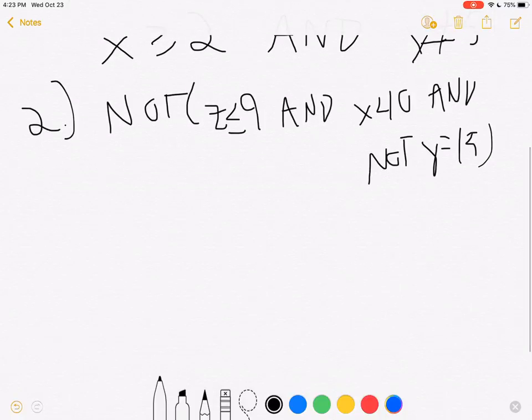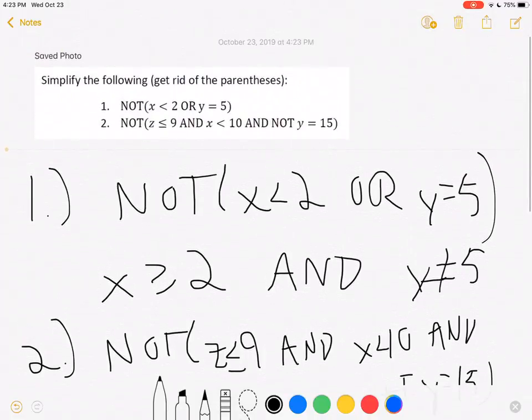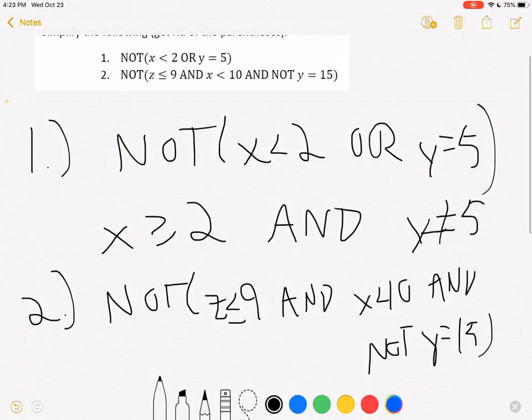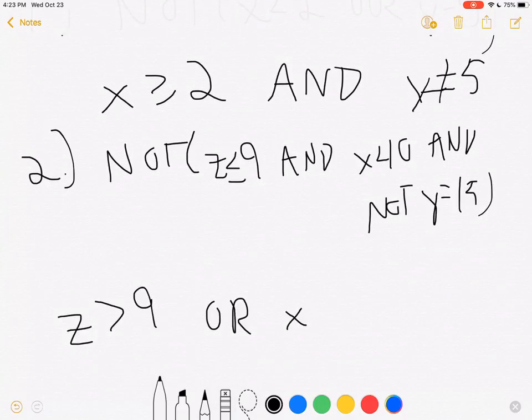So we can use De Morgan's Law here as well. First I'm going to negate the first thing, so instead of less than or equal to, this will be z is greater than 9, change the and to an or. Here I have x is less than 10, so I'm going to change that to x is greater than or equal to 10, change the and to an or, and then finally, my last thing to negate is not y is equal to 15. The negation of not y is equal to 15 is just y is equal to 15.